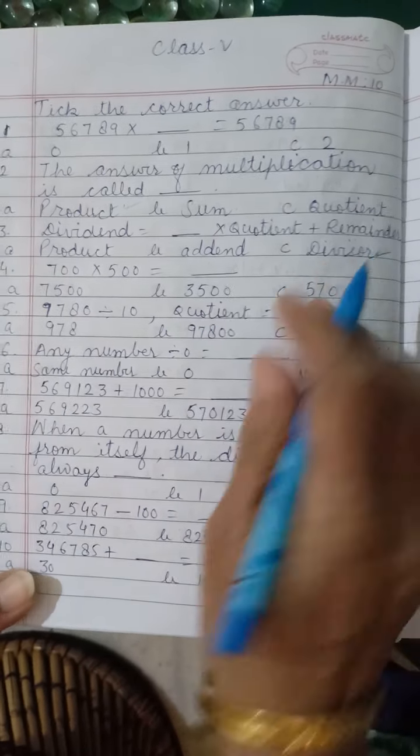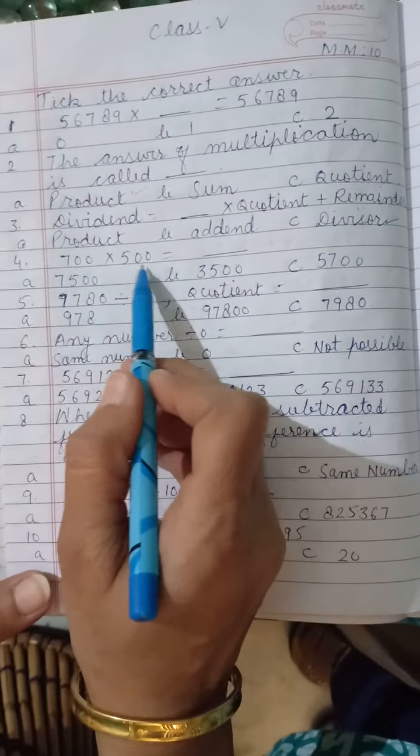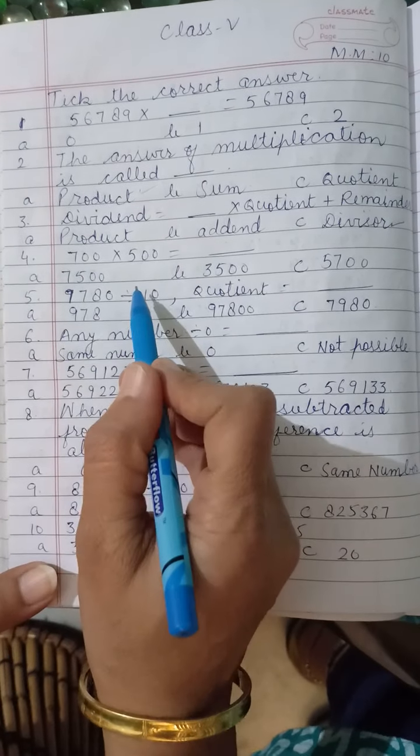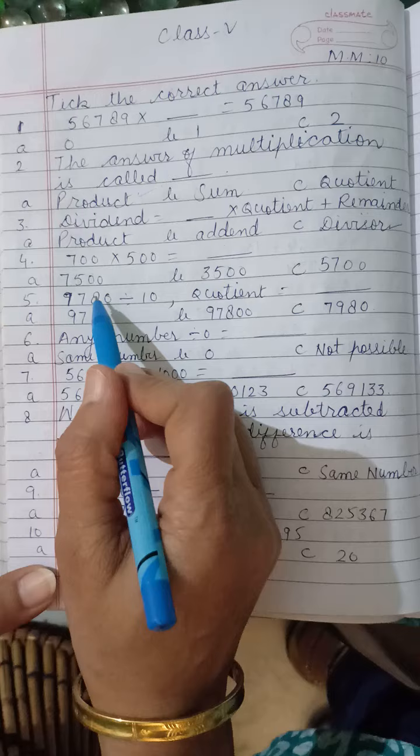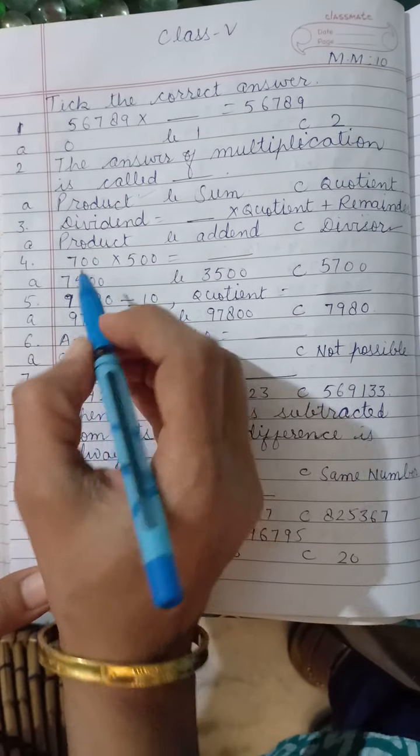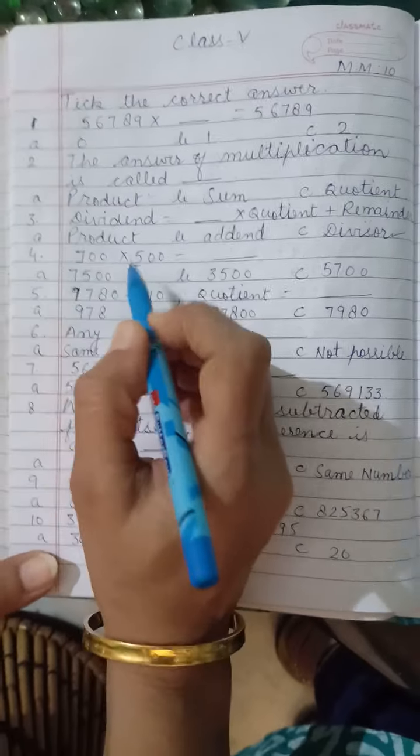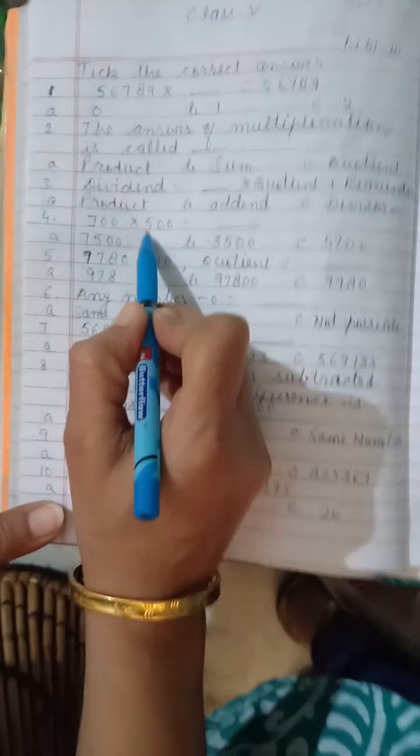7 multiply by 500. For multiplying these two numbers, what you will do? You will multiply only non-zero digits. Which are non-zero digits? 7 and this is 5. 7 fives are 35.